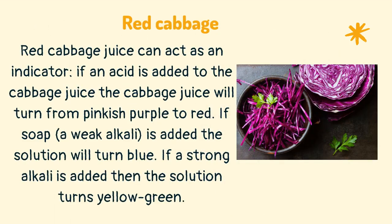Red cabbage juice can act as an indicator. If an acid is added, the cabbage juice will turn from pinkish purple to red. If soap, which is a weak alkali, is added, the solution will turn blue. If a strong alkali is added, the solution turns yellow green.